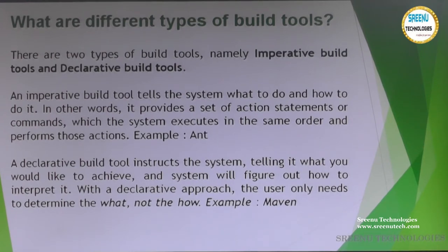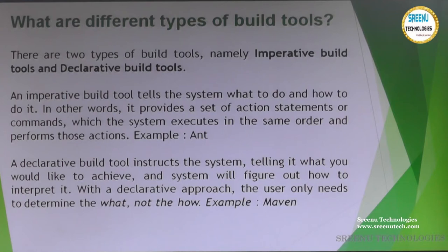There are basically two different kinds of build tools: imperative build and declarative build. An imperative build tool tells the system what to do and how to do it. It provides a set of action statements or commands that the system executes in a defined order. An example of this is Ant, where we mention each and everything we require to happen in our project.